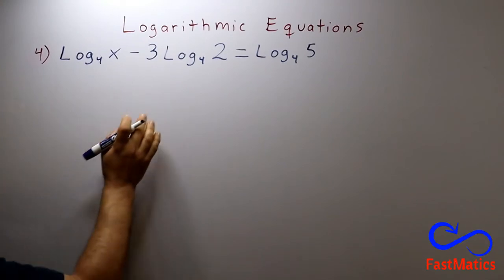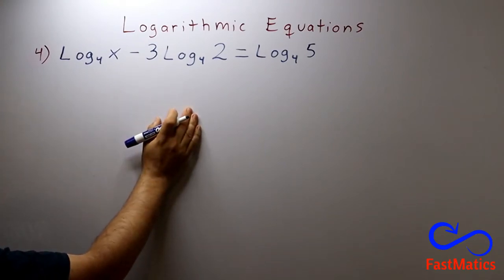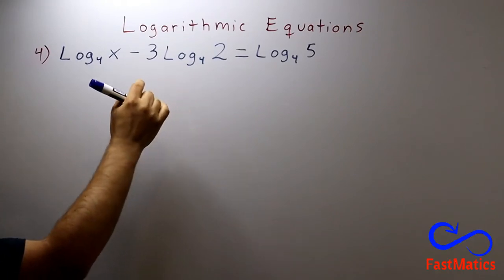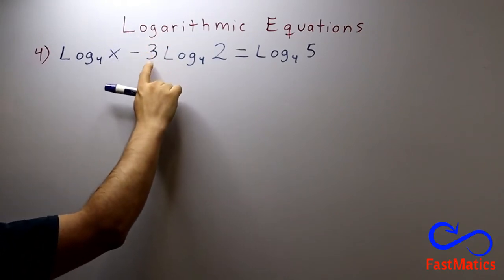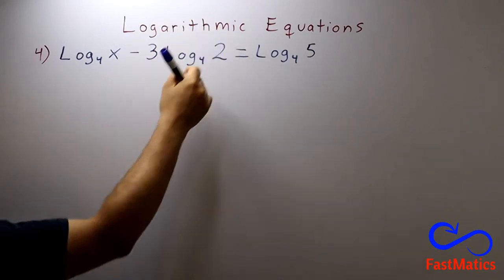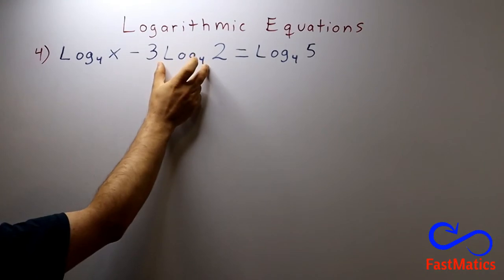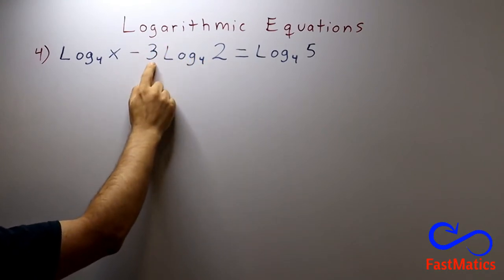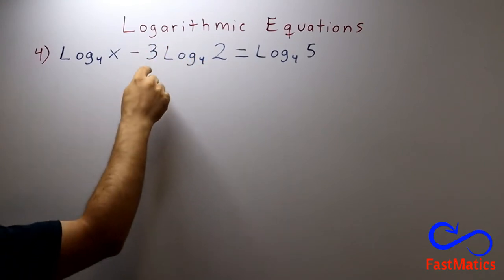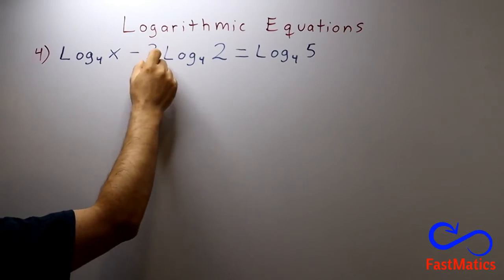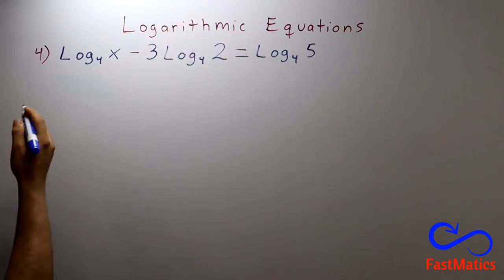And then I can see that I could use the property of passing this factor to the exponent. You can never work if you have a logarithm multiplied by something. So you can pass this 3 as an exponent.